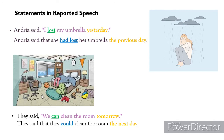Let's change statements into reported speech. Look at the first statement: Andrea said, 'I lost my umbrella yesterday.' The actual words spoken by Andrea are given within inverted commas. In reported speech, this becomes: Andrea said that she had lost her umbrella the previous day. Notice that the pronoun, the tense, and the time phrase all change.